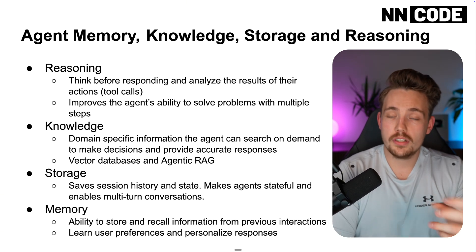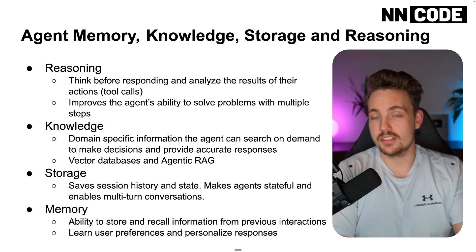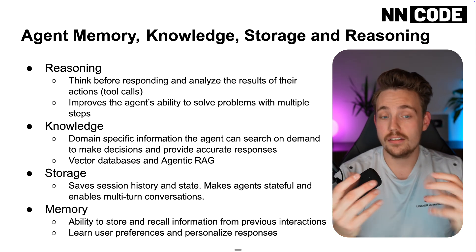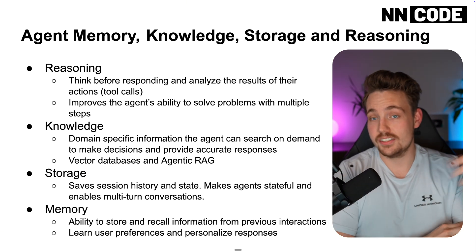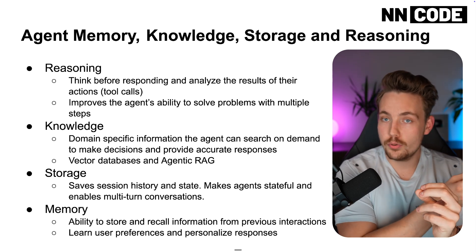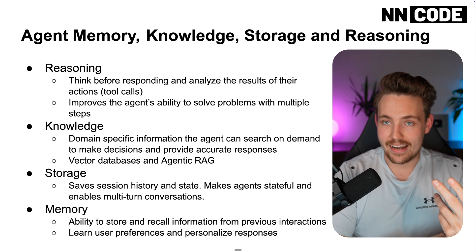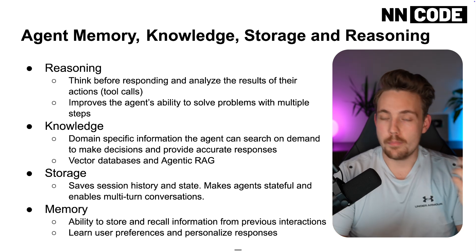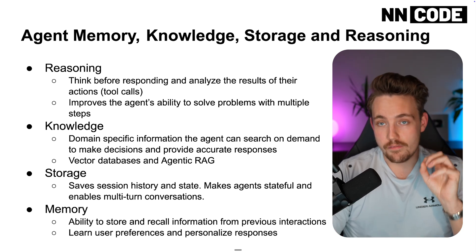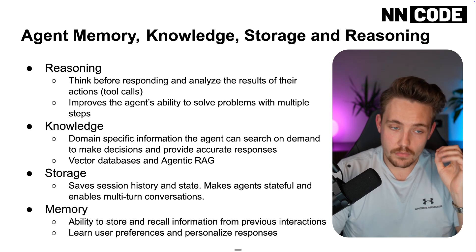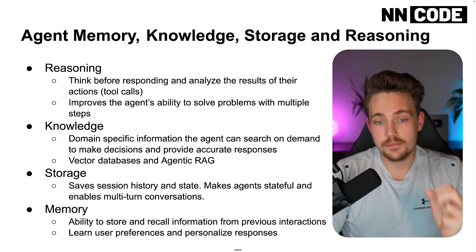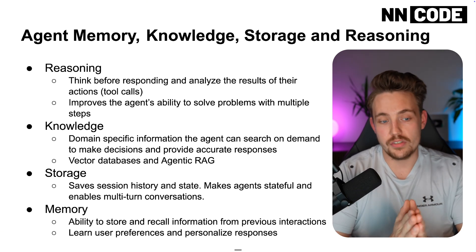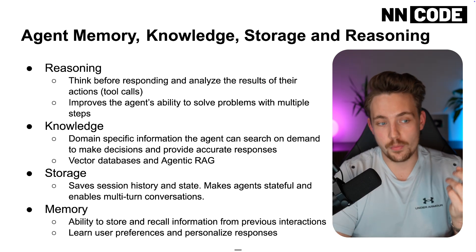The agent can think before responding and also analyze the results of its actions. It can take actions, call different tools, generate a response, and then also analyze that response. Often in the agent world, it generates something, gets the response, takes input data, goes back again, analyzes the response it generated, compares it against the input data, makes corrections — essentially a verification process with a feedback loop. This reasoning improves the agent's ability to solve problems with multiple steps, like chain of thought reasoning in the same way that a human reasons.